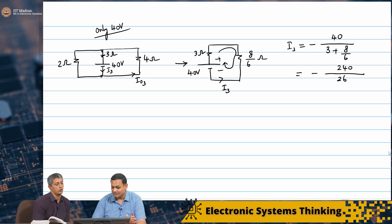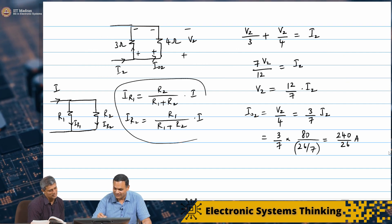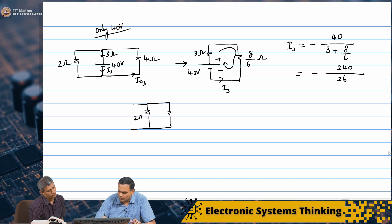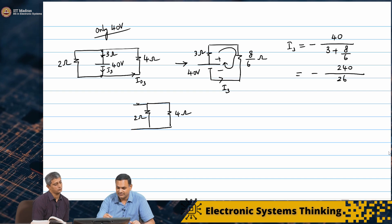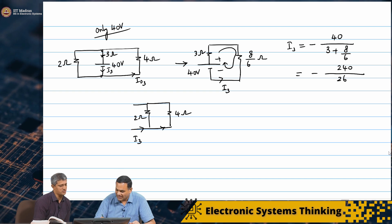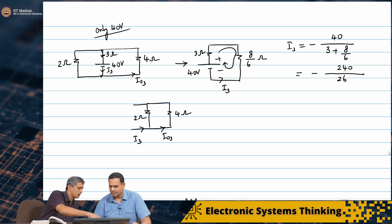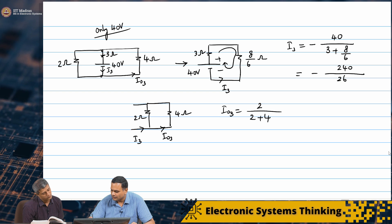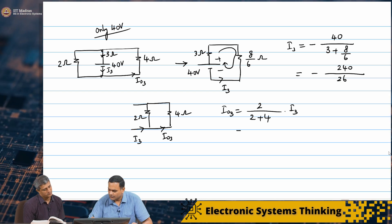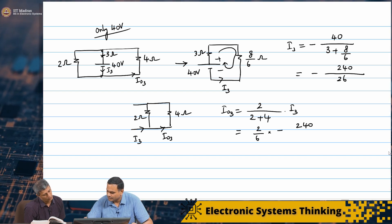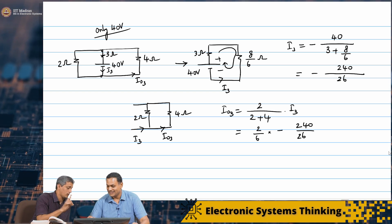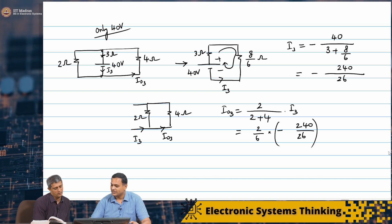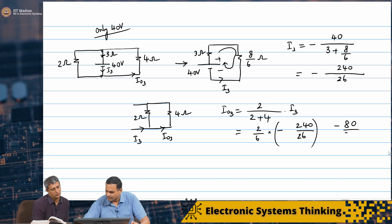Now finding I₀₃: the current I₃ splits between the 2 ohm and 4 ohm resistors. By the current divider rule, the current through the 4 ohm is 2/(2+4) × I₃ = (1/3) × (−240/26) = −80/26 amperes. We must retain that minus sign carefully.